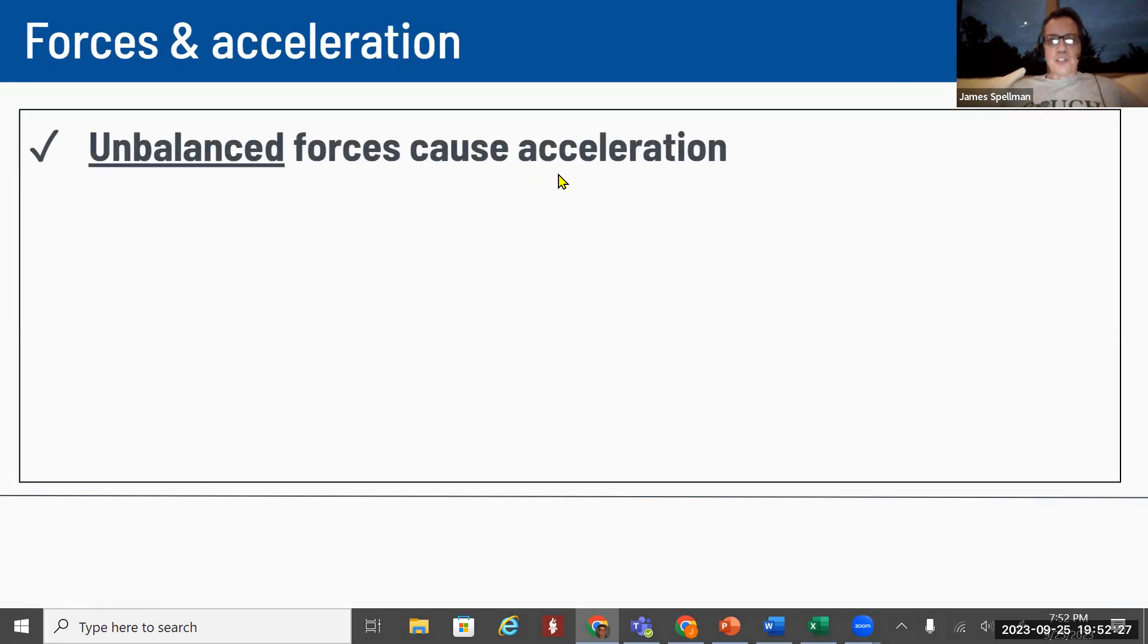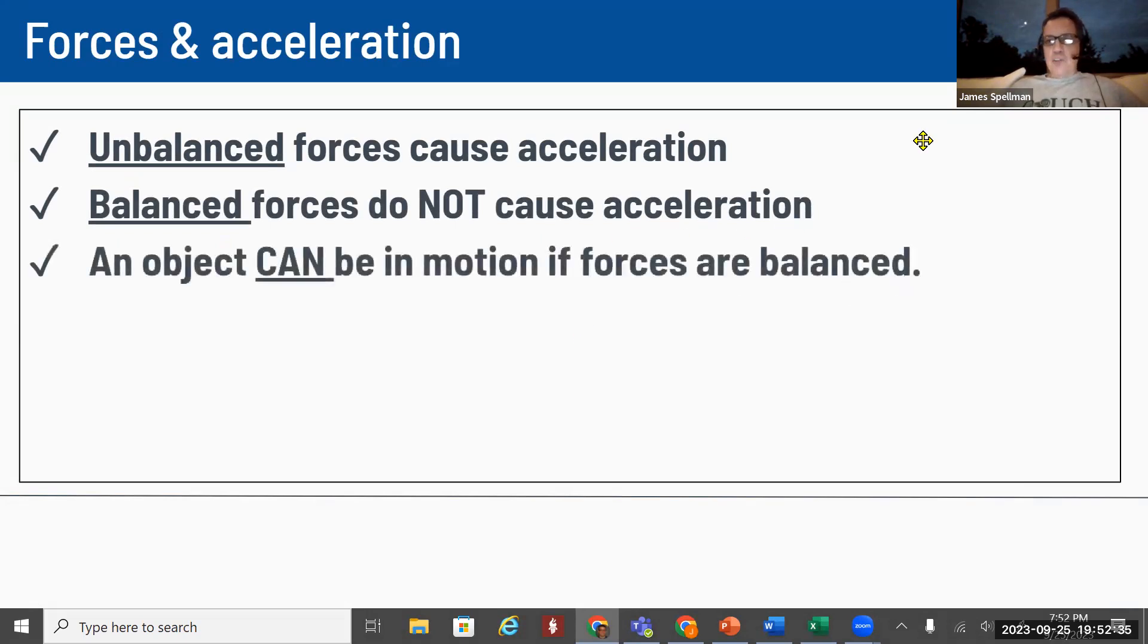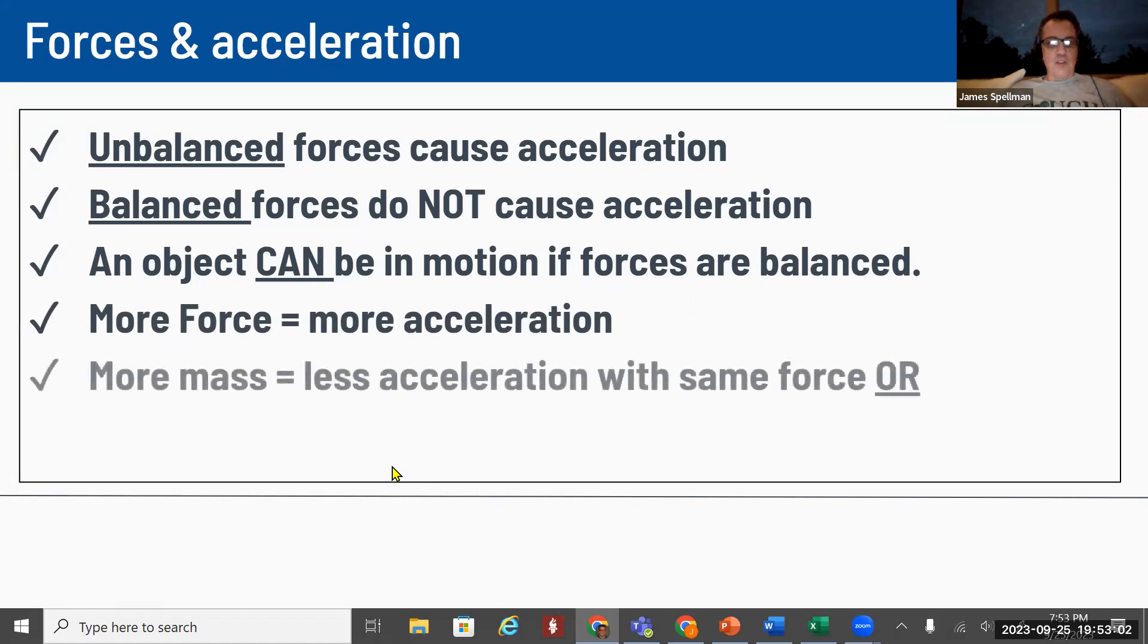So as a review, to get an acceleration, we need unbalanced forces of some type. If forces end up being balanced, then we don't get acceleration. An object can be moving even though there's no acceleration. So just because something has got a force acting on it doesn't mean a whole lot. You have to look at the whole situation. If an object is in motion, it may have forces that are unbalanced, but it can have forces that are balanced. If the forces are balanced, the object in motion is just not accelerating. The more force we apply to something, the more acceleration we're going to get out of it.